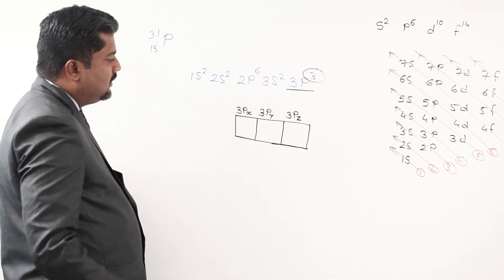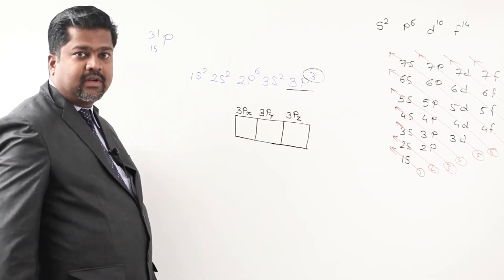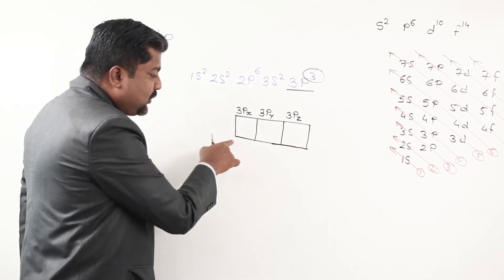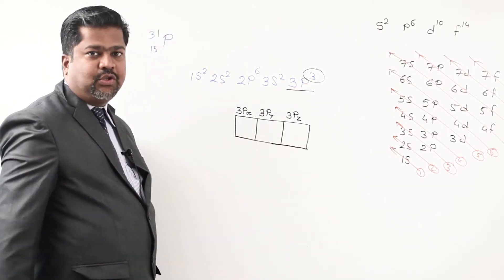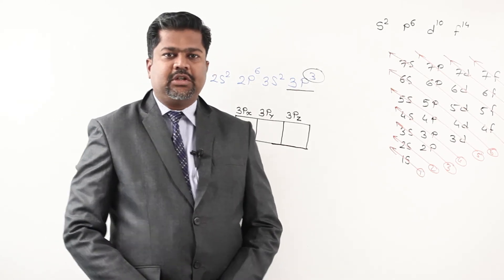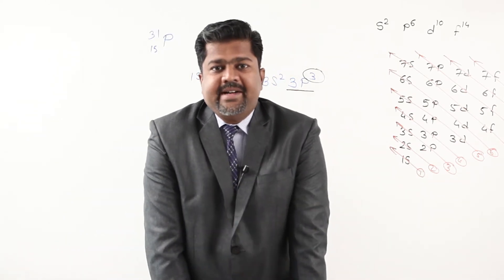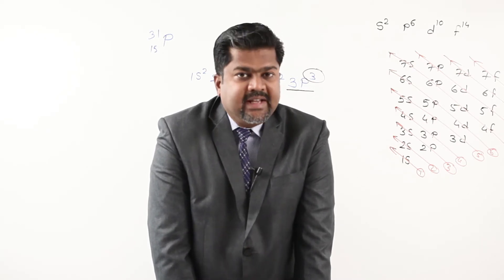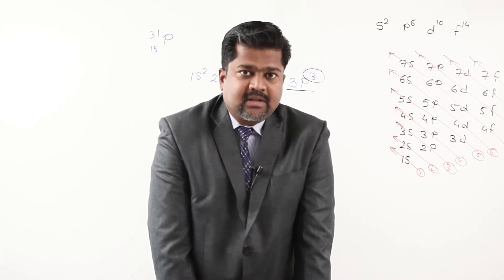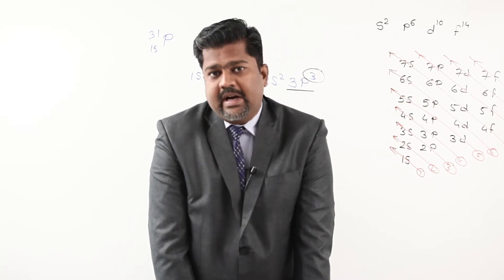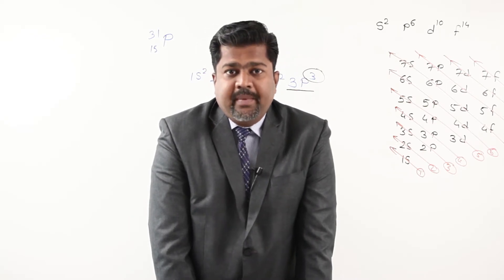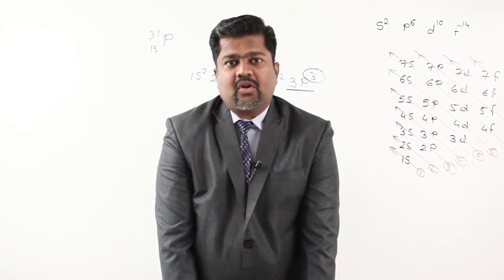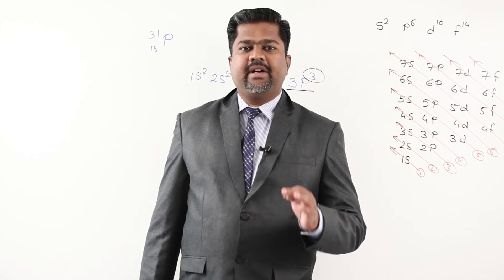These three orbitals are degenerate — they have the same energy. In this box diagram I show 3s separately (with a gap), because 3s has a different energy from 3px, 3py, 3pz. The 3px, 3py, 3pz are degenerate with each other. Also note that in any orbital, two electrons can be accommodated — one spins clockwise and the other anticlockwise.